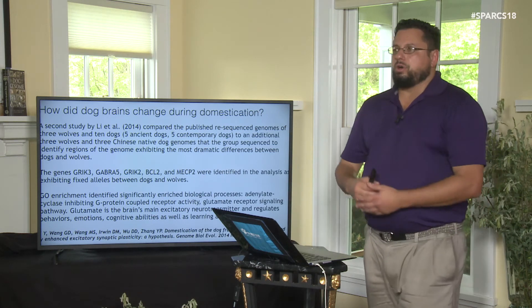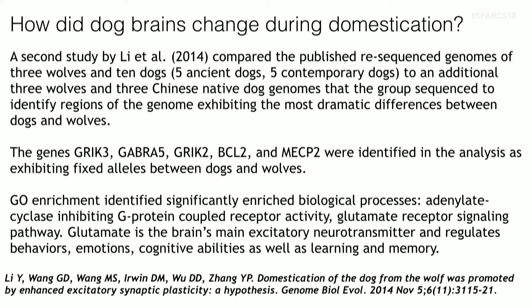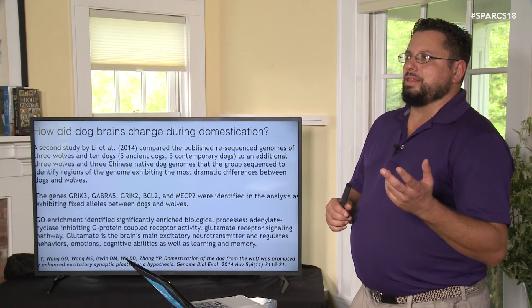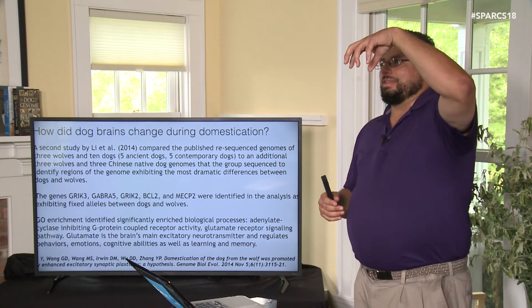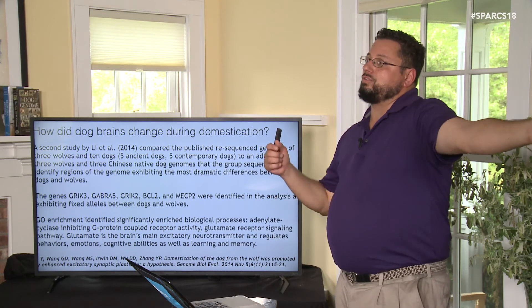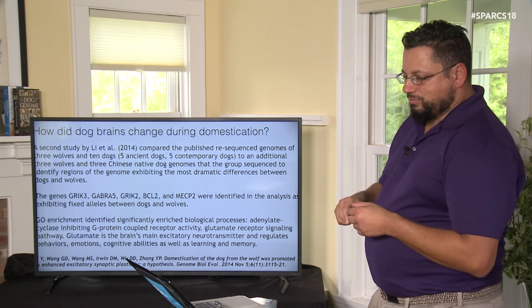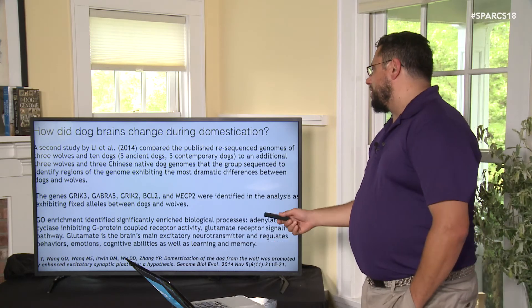All companion dogs have undergone selection at the neurological level for affiliation and social bonding with humans. Gene ontology enrichment identified significantly enriched terms including adenylate cyclase inhibiting G protein receptor activity, glutamate receptor signaling, and the NMDA receptor — which is a coincidence detector that only opens when a neuron is already firing, because a blocking ion is displaced, and mutations in this gene cause significant memory deficiencies. Glutamate is the brain's main excitatory neurotransmitter, regulating behaviors, emotions, cognitive abilities, learning, and memory.